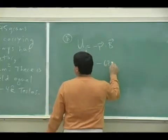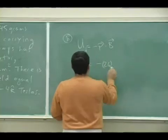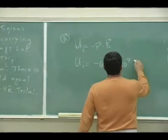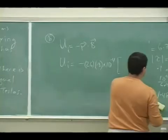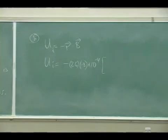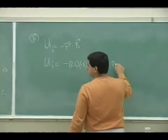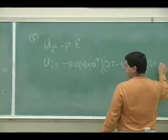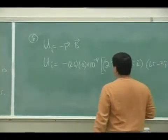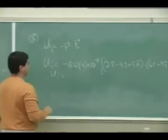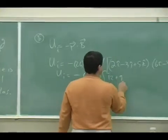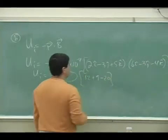So you have minus, remember the mu was, no sorry, 26 was the number of turns times the current times 10 to the minus 4, then you'd take the dot product of 2. That's going to be 12, negative 3 is 9, 5 and negative 4 is negative 20.